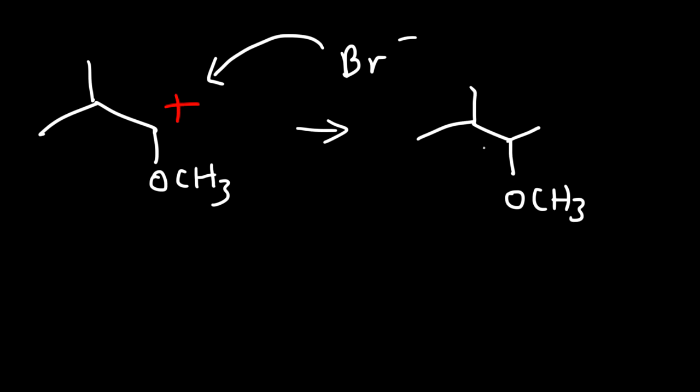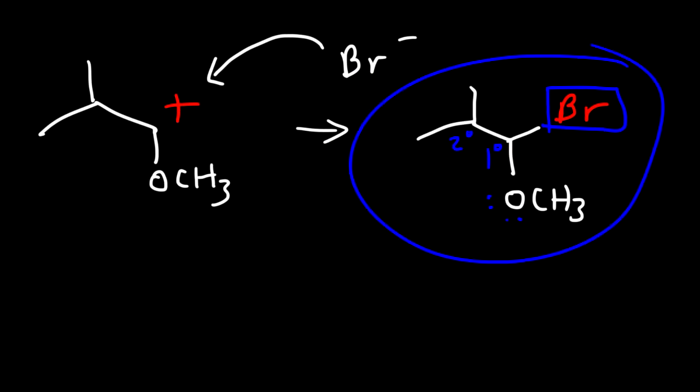So this is one of those situations where the bromine will go on the less-substituted carbon of the double bond — and that's when the positive charge can be stabilized by resonance by something else. If you see an oxygen or something with a lone pair that can stabilize the carbocation, chances are the bromine atom will go there. So watch out for questions like that.